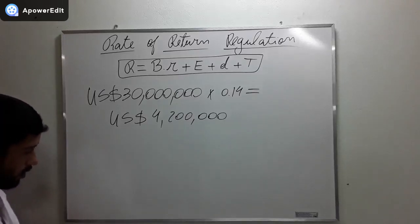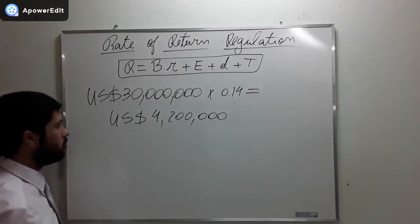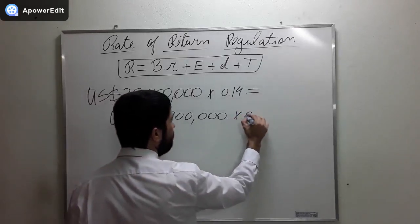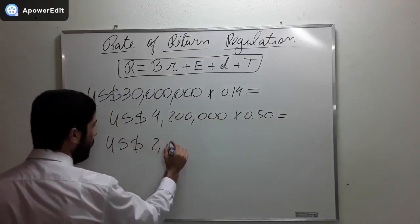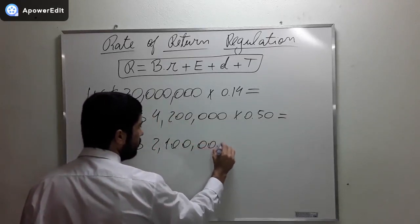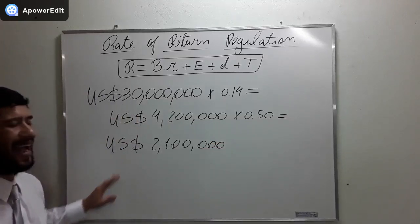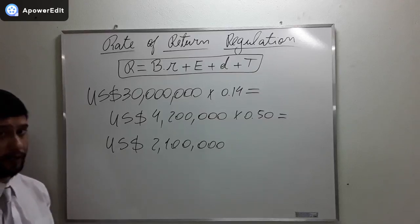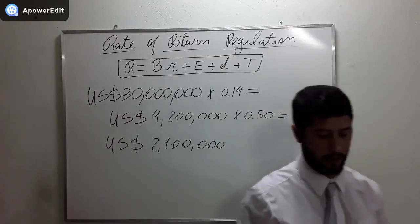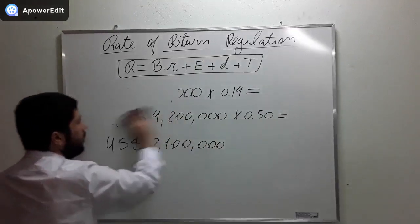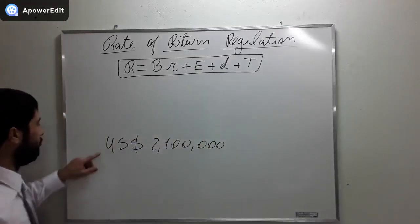So this is the first result that we get. The second result is this: the exercise says that 50% of this is equity. So if we multiply this by 0.50, we get $2.1 million USD. This is the amount of dollars, this is the amount of money that we are going to profit after tax.